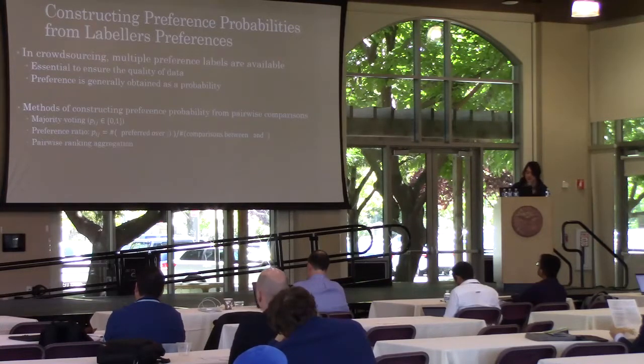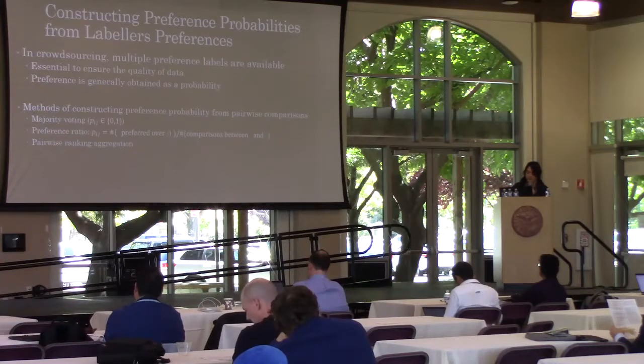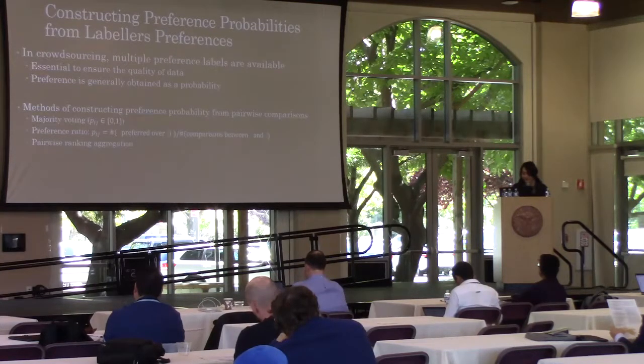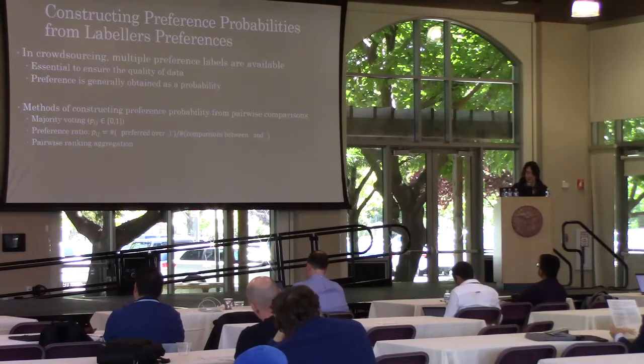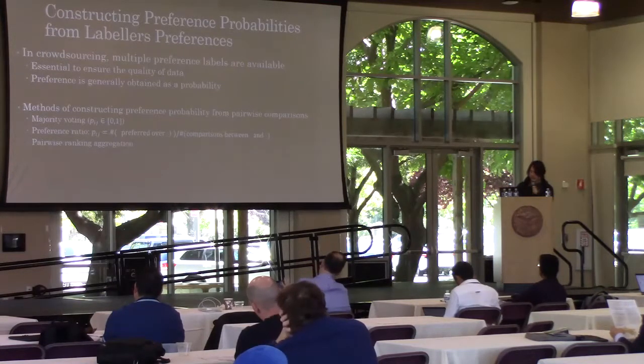In general, preferences can be obtained as a probability. The method of constructing preference probabilities from pairwise comparisons is, for example, majority voting, preference ratio, or pairwise counting aggregation.